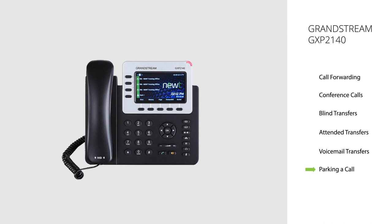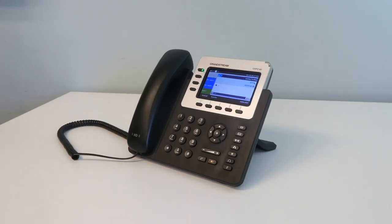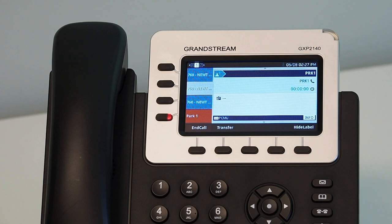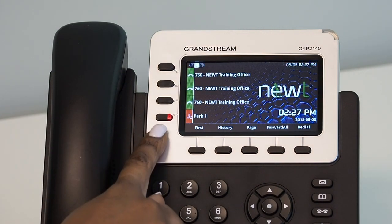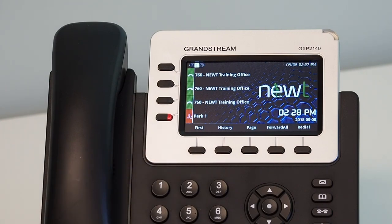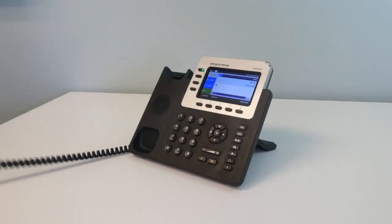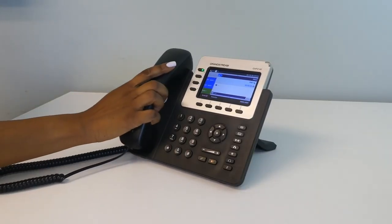Call Park. Parking a call places it into a hold state but allows you to retrieve the call from a different handset. Park calls on the Grandstream models also provide full visibility to where a call is parked for easier tracking. During an active call, using the multipurpose keys located on the side of the screen, select a park number position to place the call on. Once selected, the caller is placed in a hold state, and the park call will be visible on all handsets by the red light indicator. Once the main screen returns to an active state, the park is complete. To retrieve a parked call, simply press the associated multipurpose key you've assigned the call to. You can either pick up the handset or leave it on speakerphone.